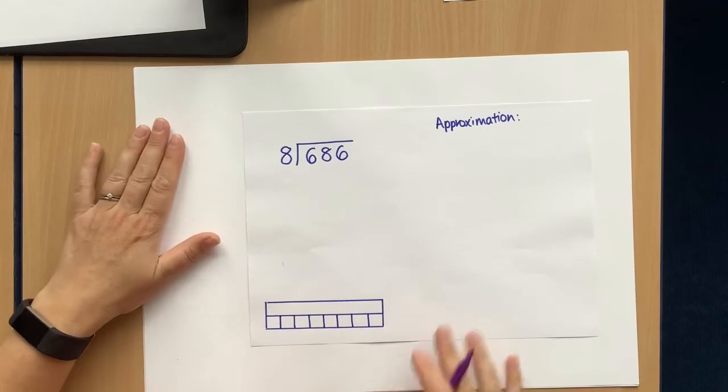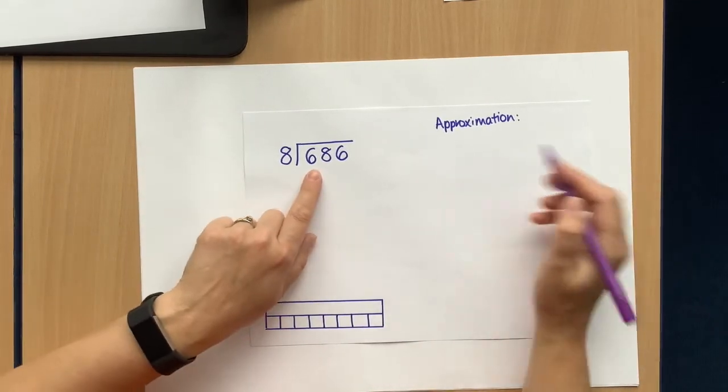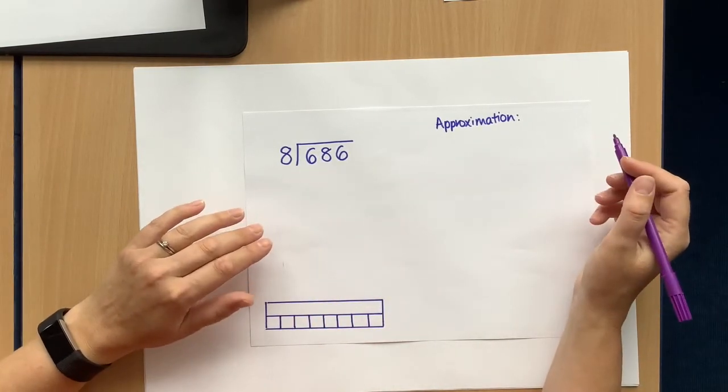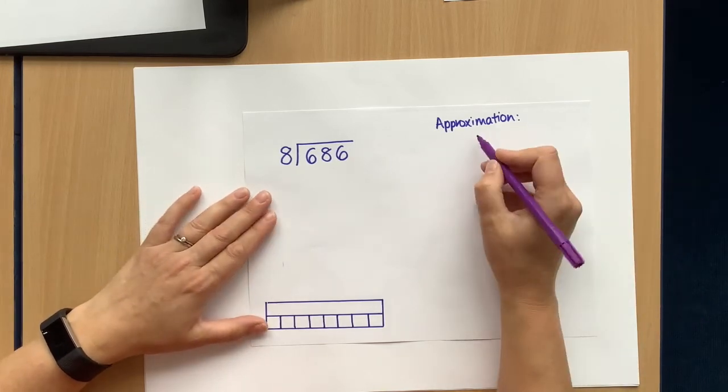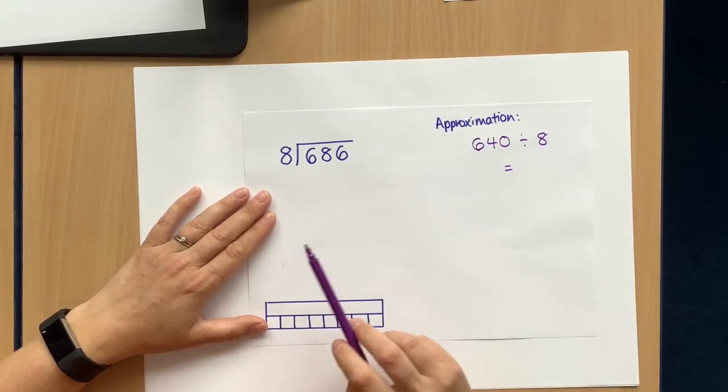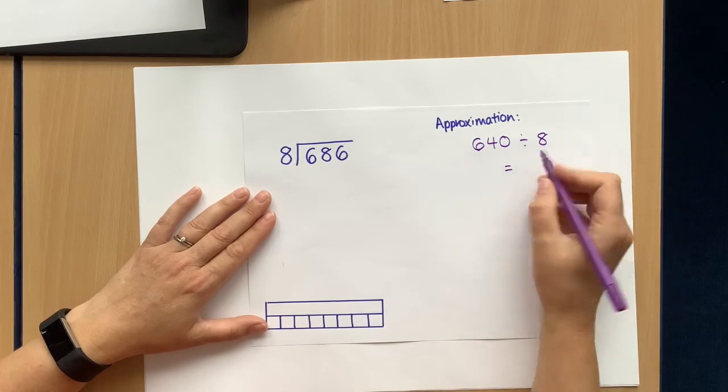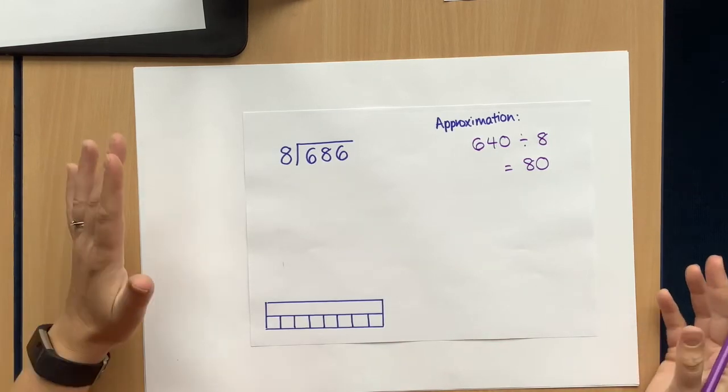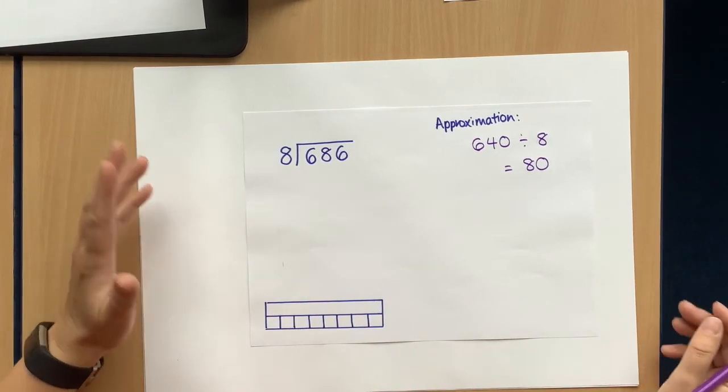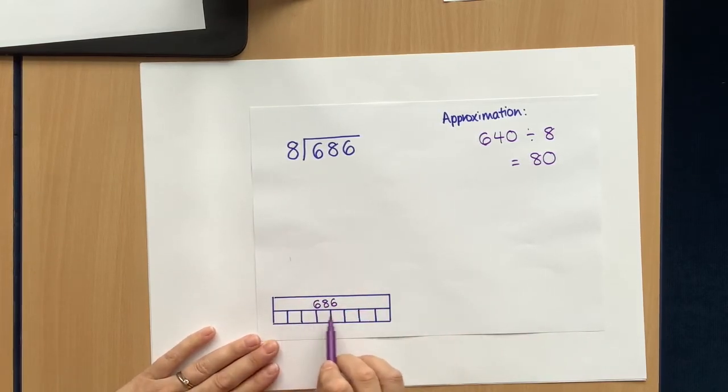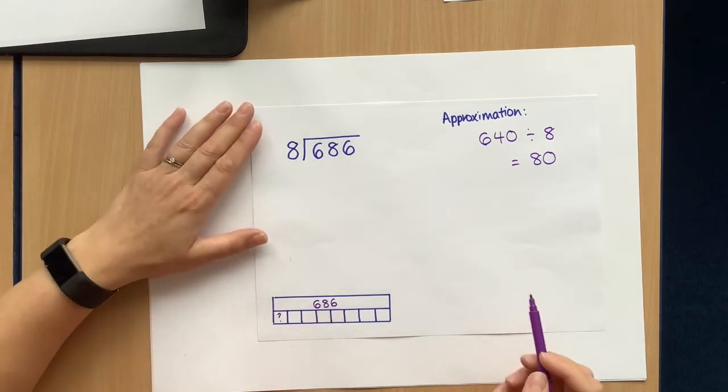Last one. Our favourite, division. So I've got 686 divided by 8. So my approximation. Well, I know my 8 times table. I know that 640 is going to be a multiple of 8 because 64 is. So I'm going to round that to 640 divided by 8. 64 divided by 8 would be 8. So 640 divided by 8 is 80. So my answer is going to be around about 80. If I get an answer that's lots bigger than that in the hundreds, 300 something or zero point something, then I know I've gone wrong. So I start with 686. I've divided it into 8 equal groups. I don't know how much is in each group. So let's work it out.